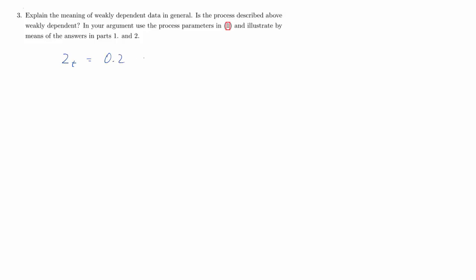In this next part, we're asked whether the process described is a weakly dependent process. Let's replicate the process: it's an AR(1) with AR(1) coefficient 0.8 and constant 0.2. You should remember that the condition for weak dependence is that the absolute value of the AR(1) coefficient is less than 1. That is of course true here, so this is a stationary and weakly dependent process.